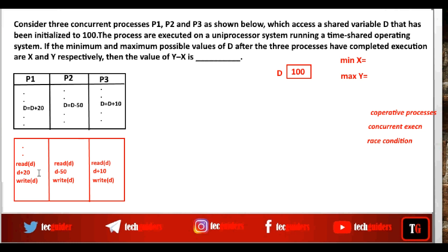So when these processes execute concurrently, more than one process can be inside the code segment accessing the same variable d. For example, let P1 read the old value 100 from d and add 20 to it. But before writing this updated value, suppose the processor is preempted and P2 gets the processor. P2 reads the old value 100, subtracts 50, and writes 50 to d. After some time, P1 gets the processor again and writes 120 to d.